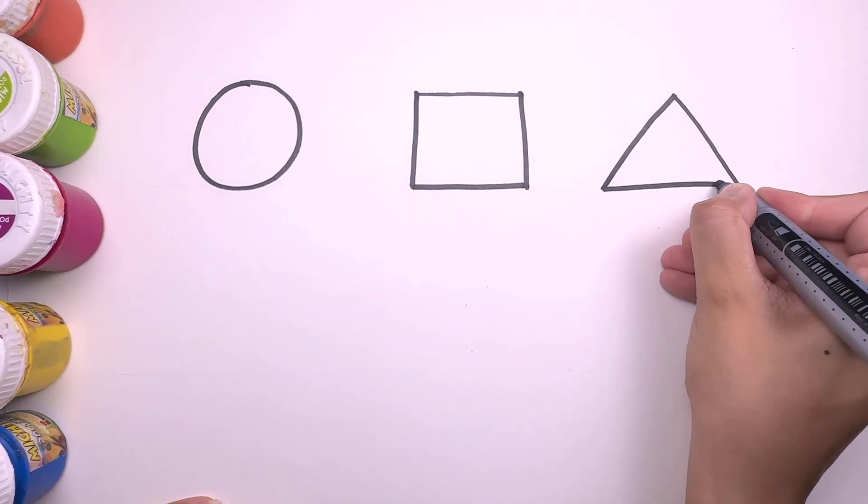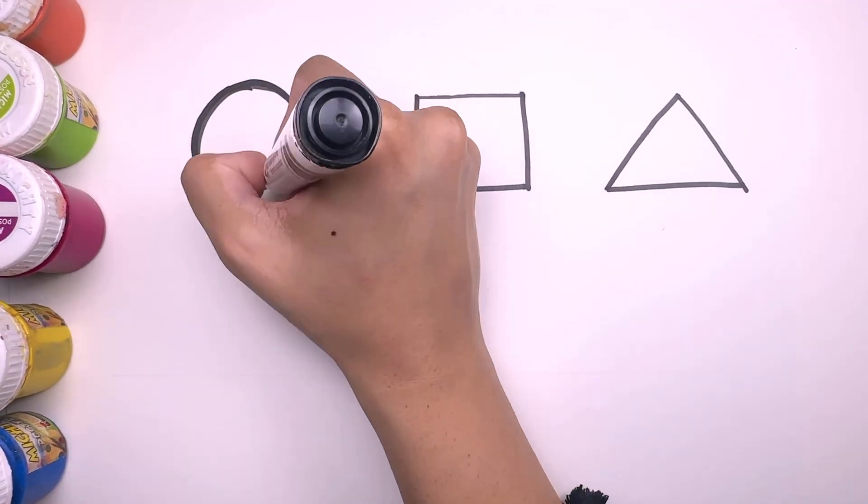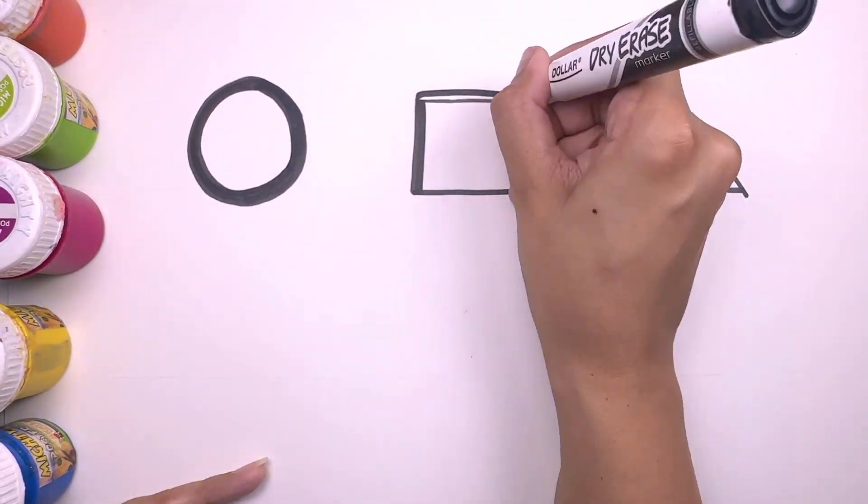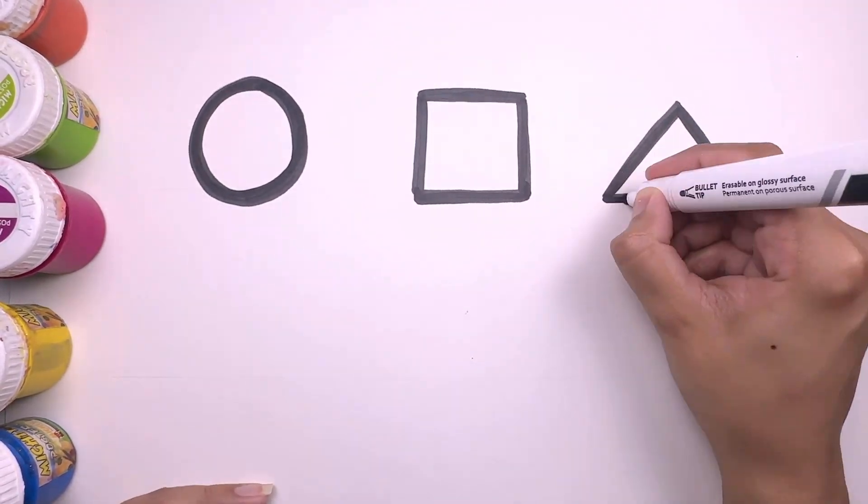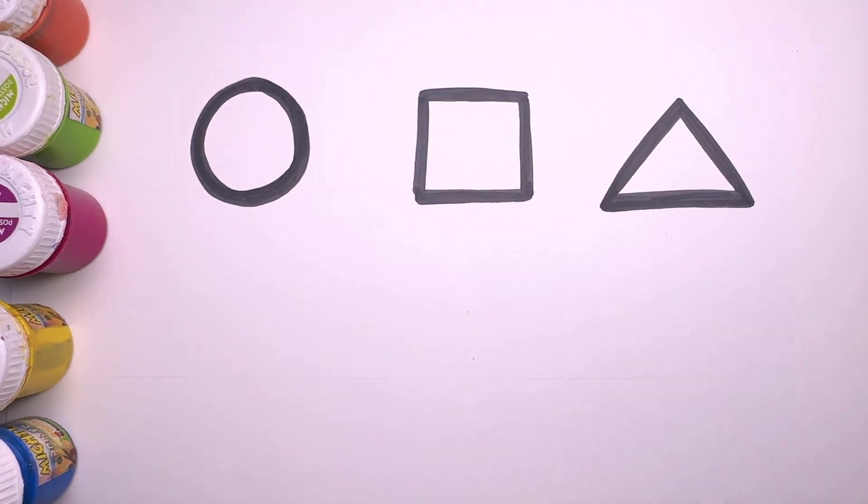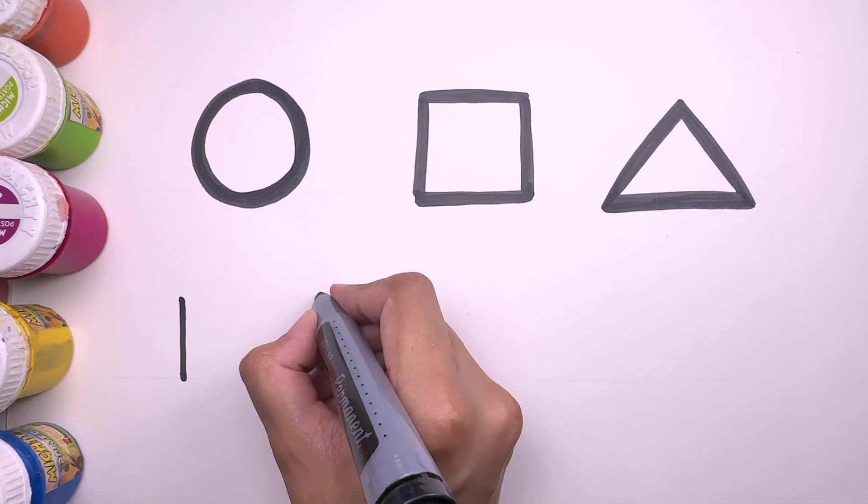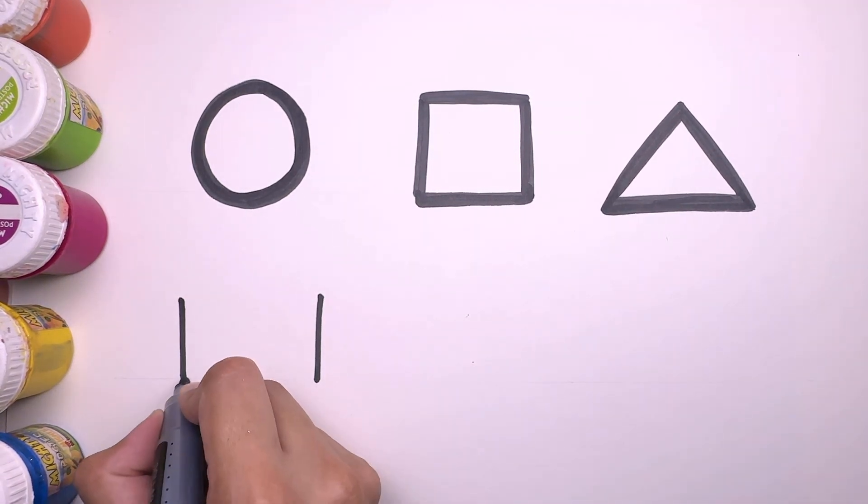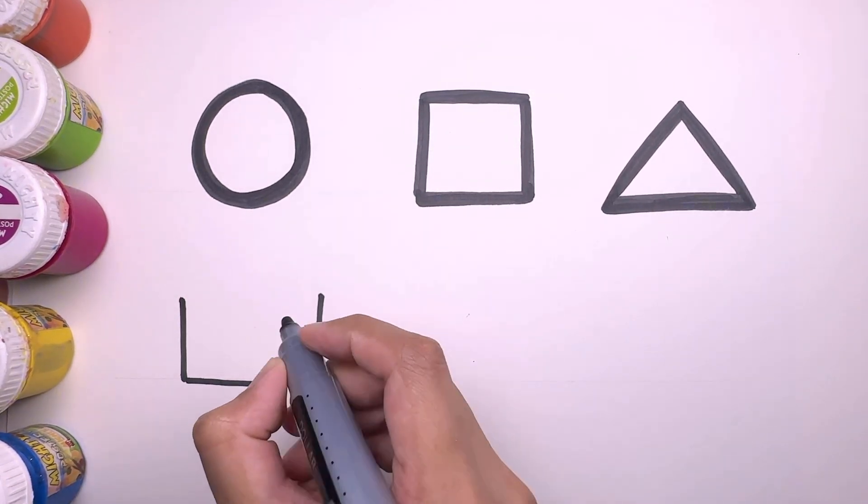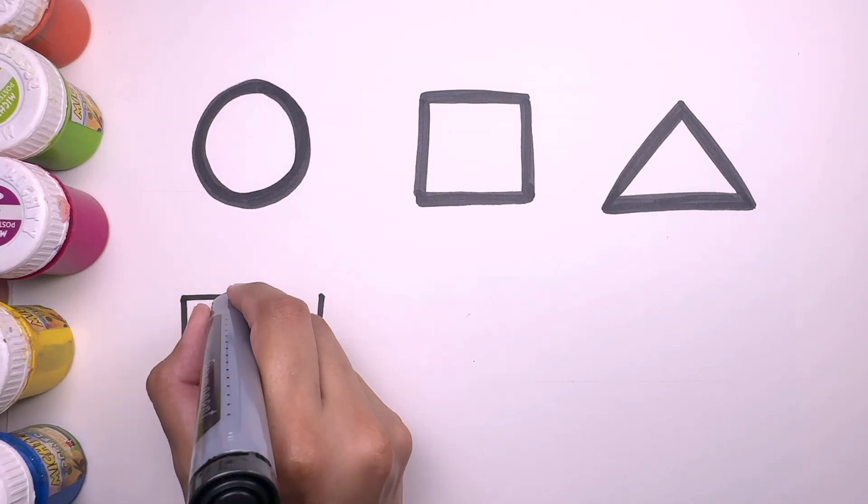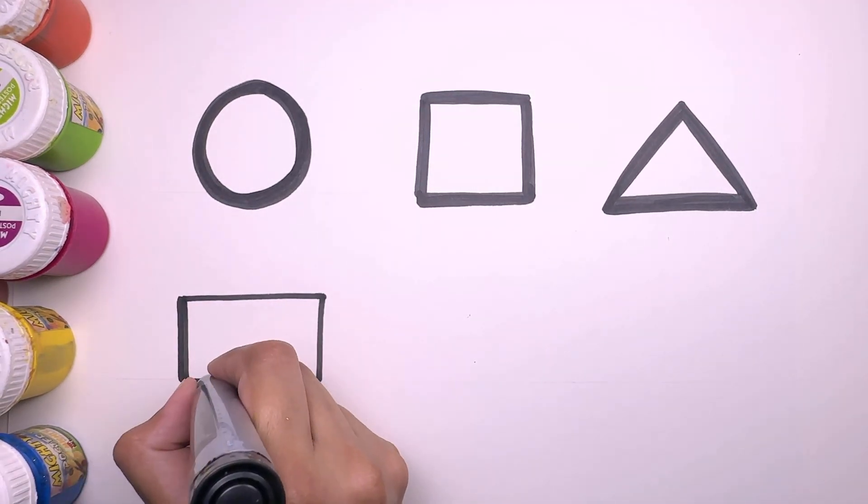This is a triangle. H for triangle. This is a rectangle. R for rectangle.